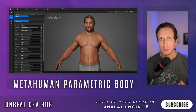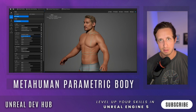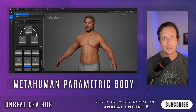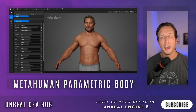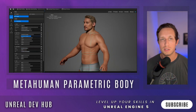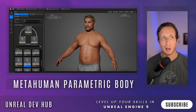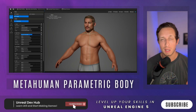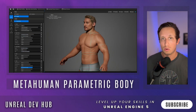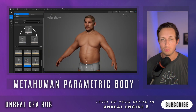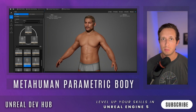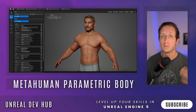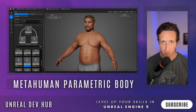Another huge MetaHuman update is the parametric body system. Previously, editing bodies in MetaHuman was not great — the face had spectacular control over facial bones, ears, nose, and eyes, but bodies lacked that same level of control. Now you can merge body type presets or edit individual body parts parametrically — expand biceps, adjust wrists, extend arms very easily. This is the level of control that tools like Character Creator from Reallusion have had for years.